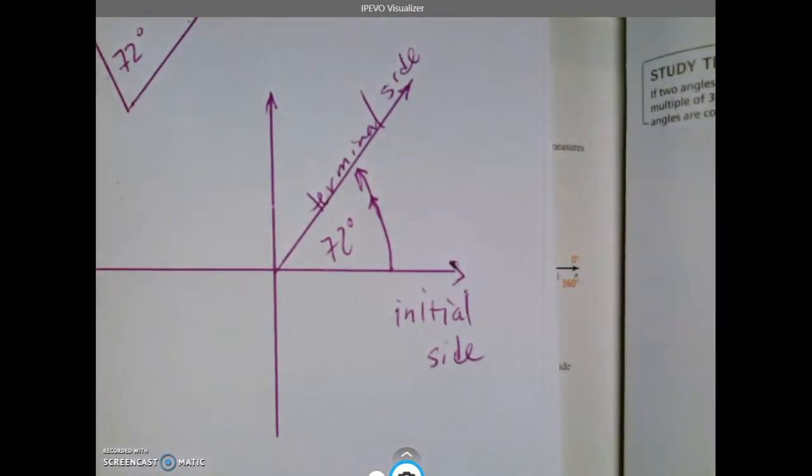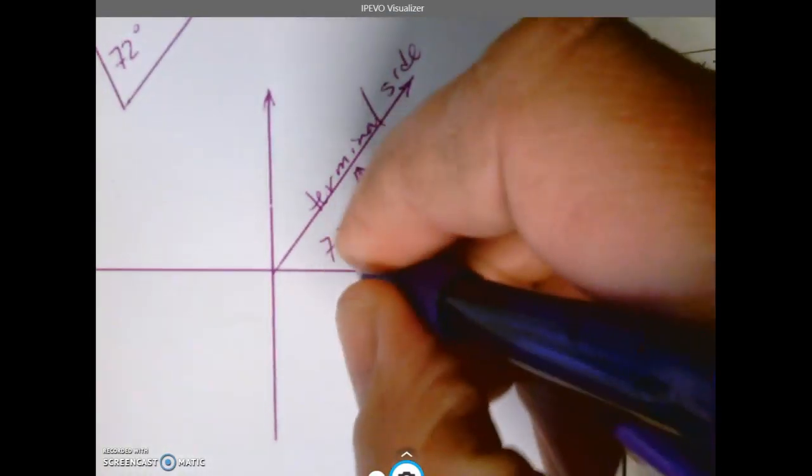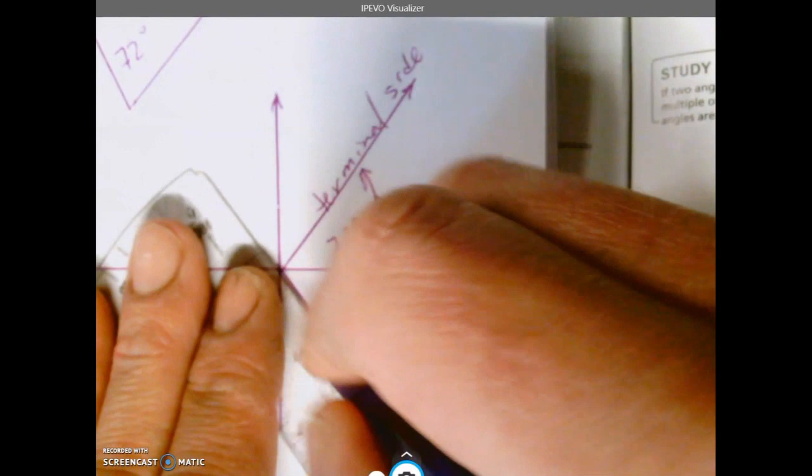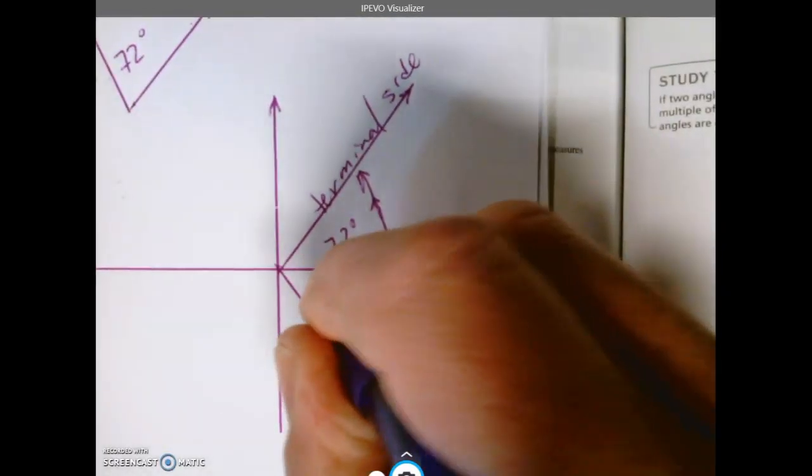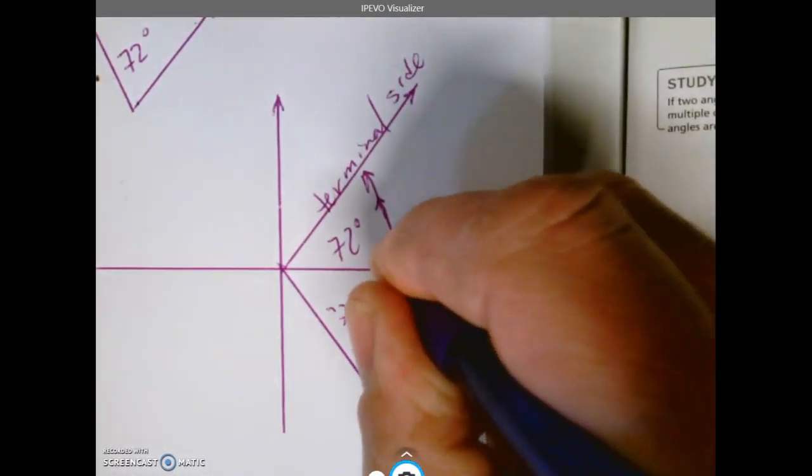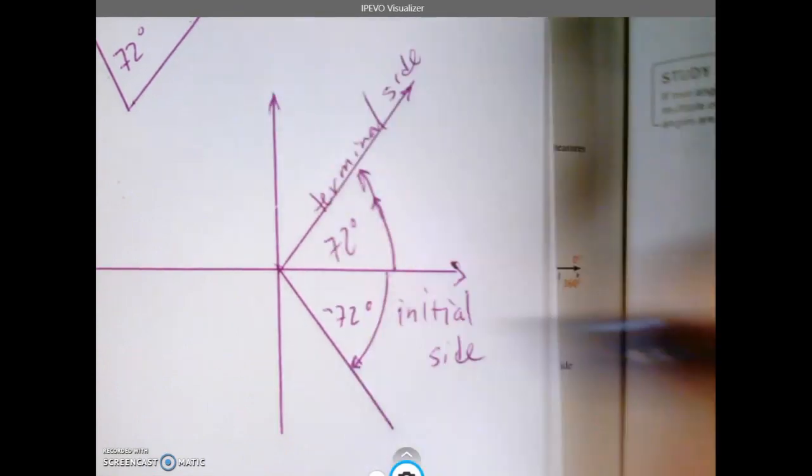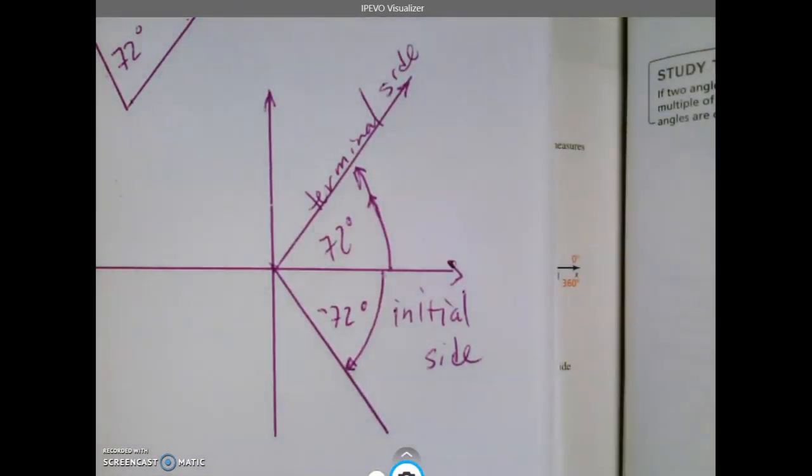Now there's other ways you could do this. You could also go negative 72 degrees. If you went negative 72 degrees, you'd be on the bottom side. So sometimes the book will go positive, sometimes it'll go negative. It's just a direction thing.